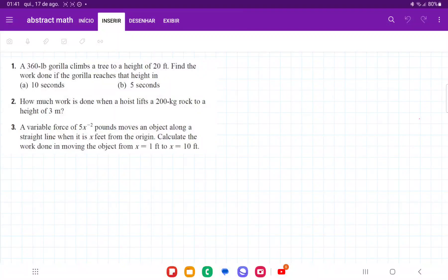For number one, a 360-pound gorilla climbs a tree to a height of 20 feet. Find the work done if the gorilla reaches that height in A, 10 seconds, and B, 5 seconds.